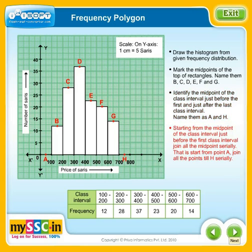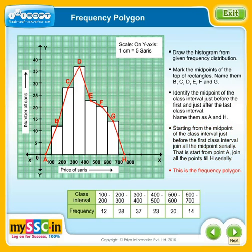Starting from the midpoint of the class interval just before the first class interval, draw through all the midpoints serially — that is, start from point A and draw through all the points till H serially. This is the frequency polygon. Thank you.